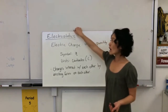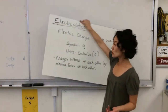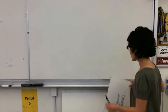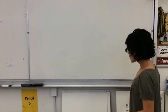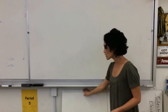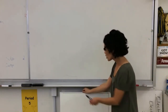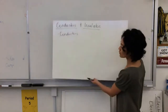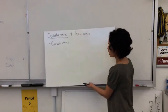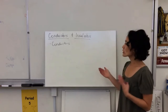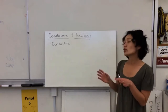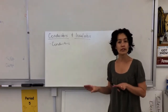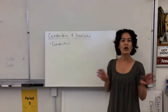Let's look at the two categories that materials fall into — we talked about this a little in the previous chapter on electricity, and we're going to delve into it more here. Materials fall into one of two categories: either conductors or insulators.